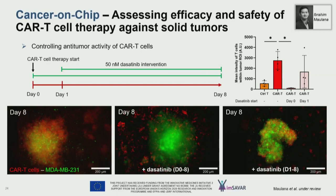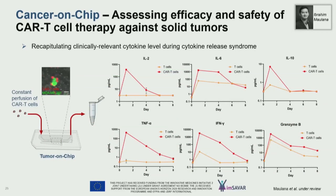If we treated with dasatinib from the beginning, we could see that we really reversed the effect and the CAR T cells behaved more like regular T cells. But if we do it at day one, we can actually start to control the efficacy of the CAR T cells. For cytokine release, we perfuse CAR T cells or T cells for 24 hours, then monitor the system for another week — and we could actually mimic clinically relevant cytokine levels similar to what you'd expect in cytokine release syndrome.